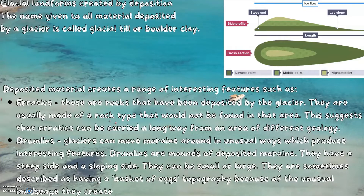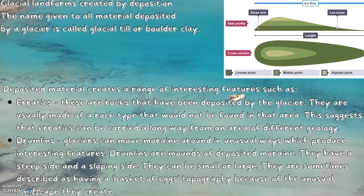Glacial landforms created by deposition: the name given to all deposited material is either glacial till or boulder clay. Deposited material creates interesting features such as erratics and drumlins. Erratics are rocks deposited by the glacier, usually made of a rock type not found in that area — that's why they're called erratics, because they're out of place. This suggests erratics can be carried a long way from an area of different geology. Drumlins are formed when glaciers move moraine around in unusual ways, producing mounds of deposited material. They almost form a hill and can be small or large, sometimes described as having a 'basket of eggs' topography because of the unusual landscape they create.